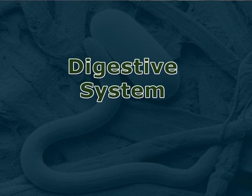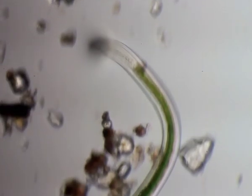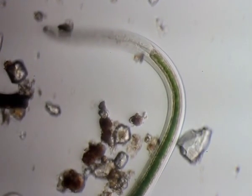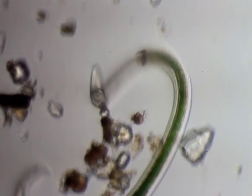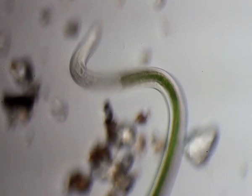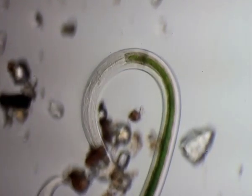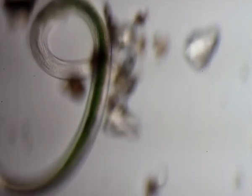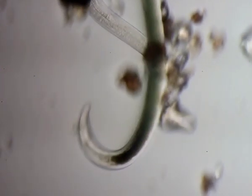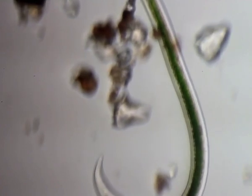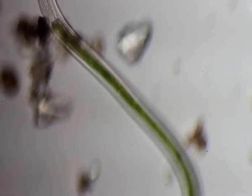The oral cavity is lined with cuticle, which is often strengthened with ridges or other structures and, especially in carnivorous species, may bear a number of teeth. The mouth often includes a sharp stylet which the animal can thrust into its prey. The oral cavity opens into a muscular, sucking pharynx also lined with cuticle. Digestive glands are found in this region of the gut, producing enzymes that start to break down the food.